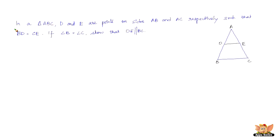The second question reads: In triangle ABC, D and E are points on sides AB and AC respectively such that BD equals CE. Given that angle B equals angle C, show that DE is parallel to BC. This is another application of the converse of the basic proportionality theorem. In triangle ABC, the given data is that BD equals CE and angle B equals angle C.